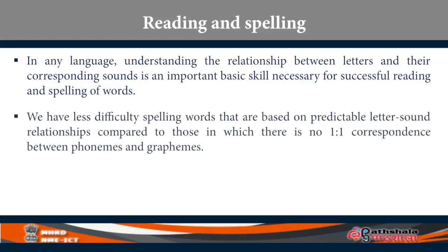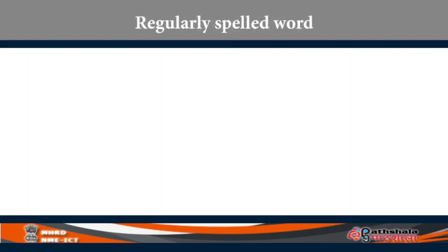We have less difficulty spelling words that are based on predictable letter-sound correspondences. That is, if one sound — a phoneme — has an equivalent one grapheme corresponding to it, it is much easier to remember, read, and spell it. Let's look at some examples from English about different types of words. Regularly spelled words: suppose you take the word 'hat' — H, A, T are the phonemes.